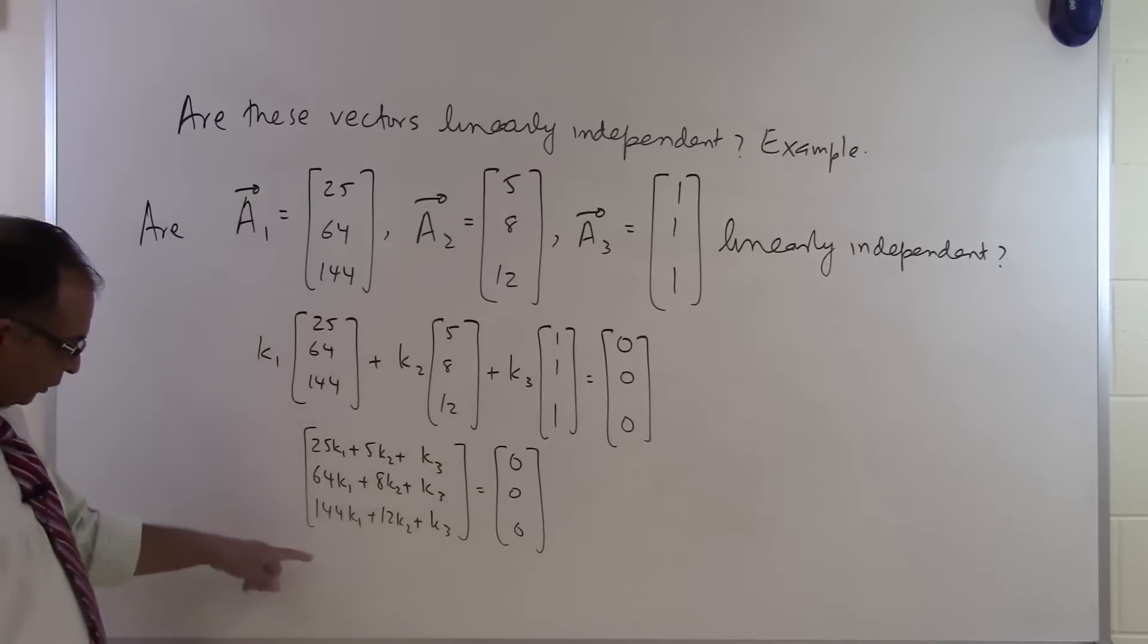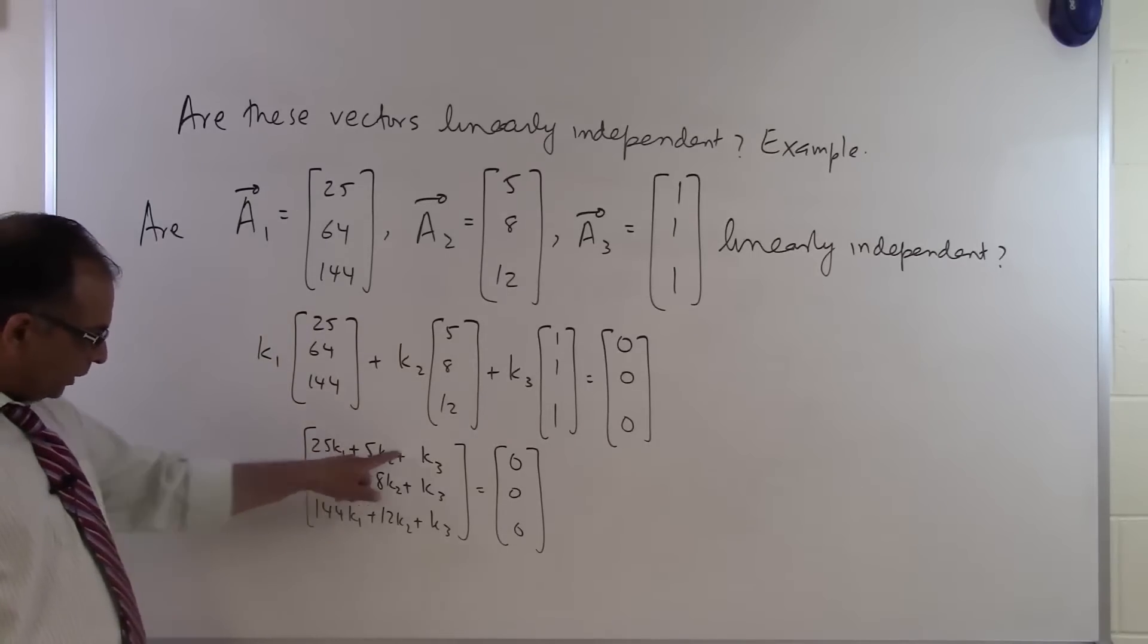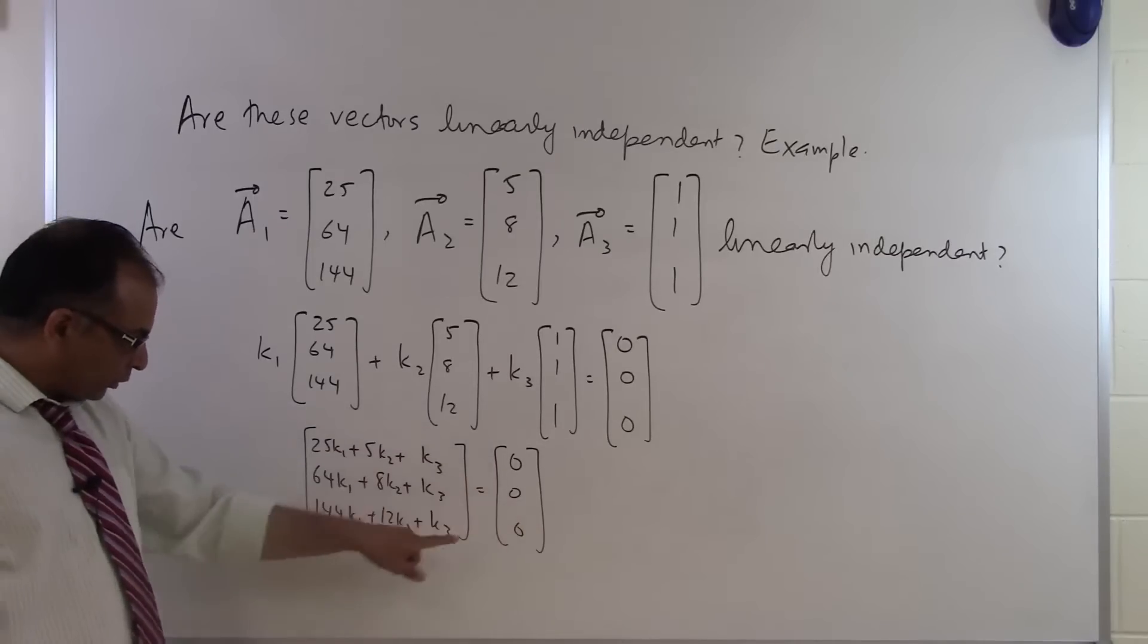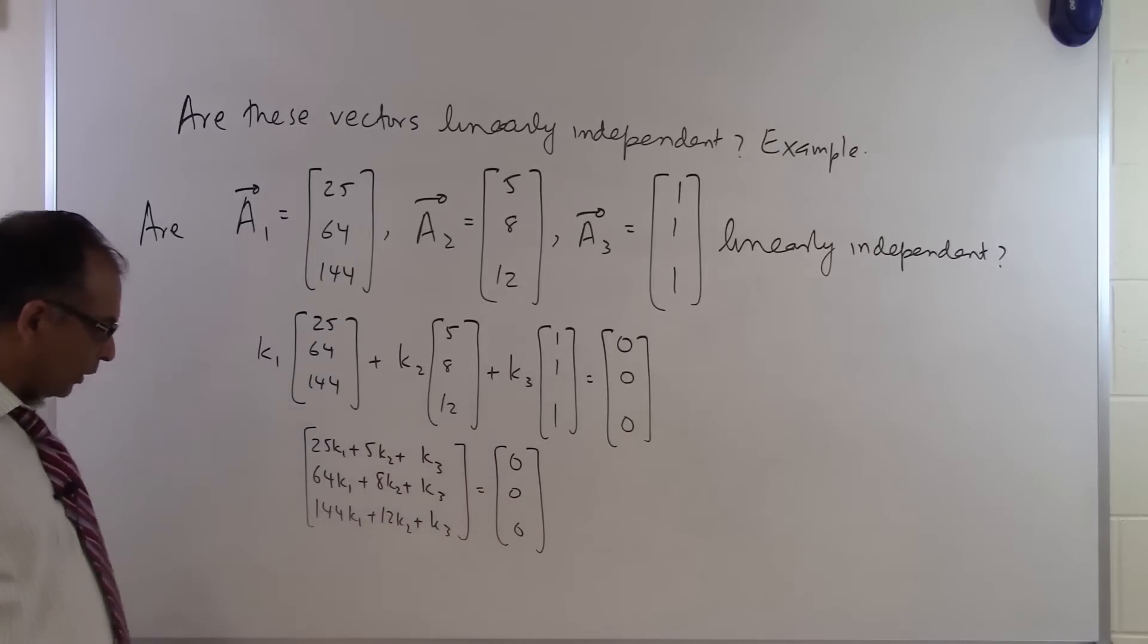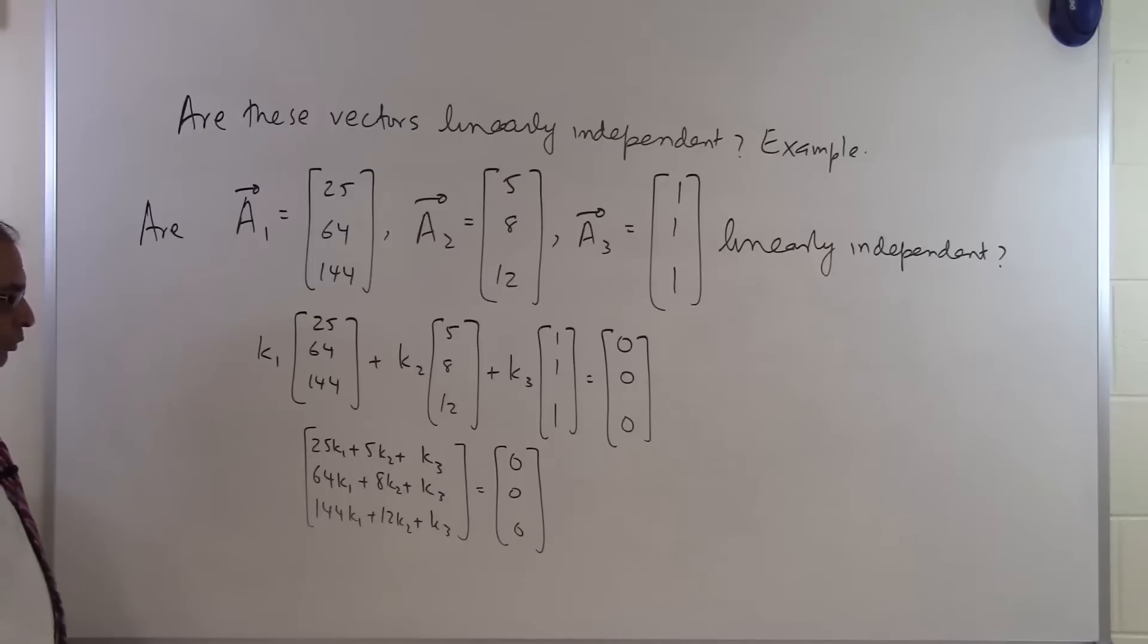So basically what you have is three equations, three unknowns. This is equal to 0, second equation equal to 0, third equation equal to 0. So you have three equations, three unknowns, and you are going to get the values of k1, k2, and k3.